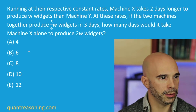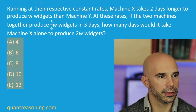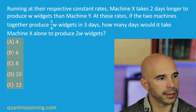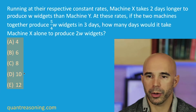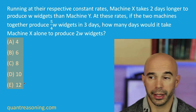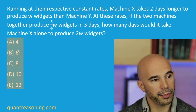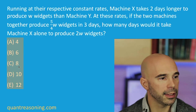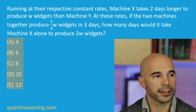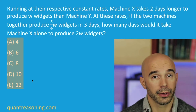As I alluded to a minute ago, these answer choices should trigger something for you. The thing they should trigger is: working backwards from the answer choices might be a good idea for this question. Why? Because they're really nice integers in ascending order. So it's possible that I'll choose to work backwards depending on the question.